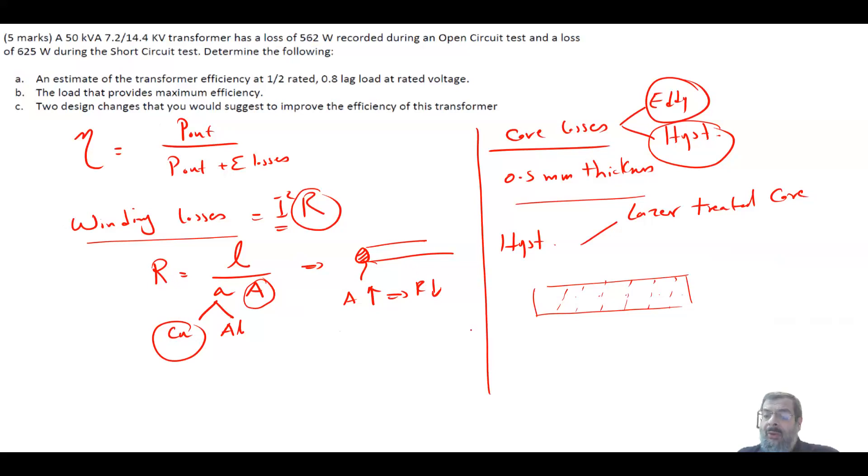We also use amorphous core, this crystalline material. And this also can basically reduce the hysteresis loss. So you have both. And sometimes, when we design the materials based on the requirement of the customer, we do that.